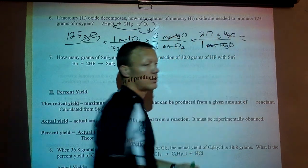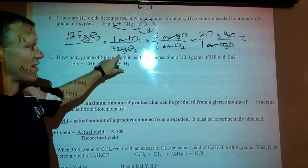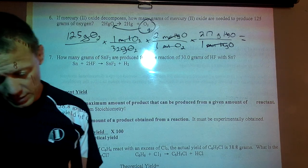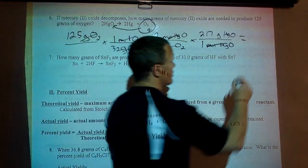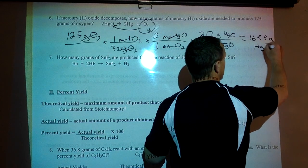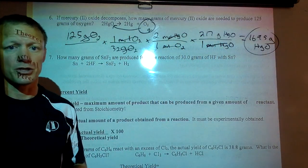We know we're done when we get to grams. 125 divide by 32, multiply by 2, multiply by 217. And the answer is that many grams HgO.